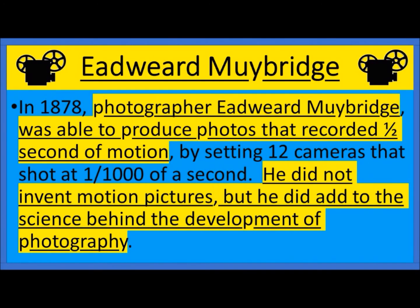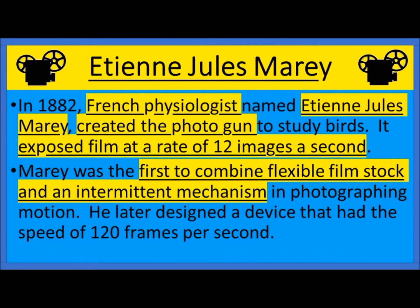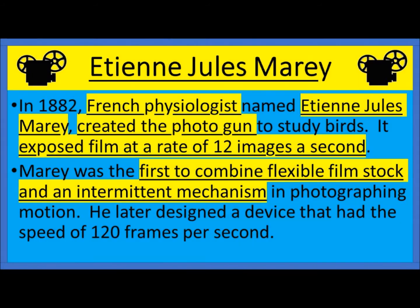Here we have Muybridge, a photographer who was able to produce photographs that recorded half-seconds of motion. He did not invent the motion picture, but he did add to the science behind the development of photography. There was also a French physiologist who created a photogun that could expose film at a rate of 12 images a second — the first to combine flexible film stock and an intermittent mechanism while photographing motion.